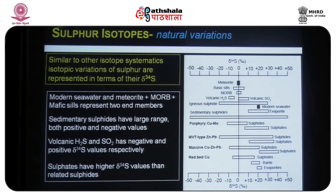Sedimentary sulfides have a huge range covering almost the entire spectrum of negative and positive delta values. These extreme variations in sulfur isotopic compositions indicate that various processes have resulted in isotopic variations. Meteorites and modern seawater appear to be the two end-member isotopic compositions, serving as source reservoirs from which sulfur has been recycled to generate these isotopic variations in nature.